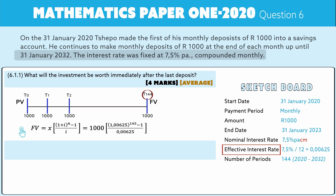If you calculate that — straightforward calculator work, practice your calculator work — you get 234,888 rand and 53 cents. That is what Tsepo would have in this account after having saved a thousand rand per month for a period of 145 months.